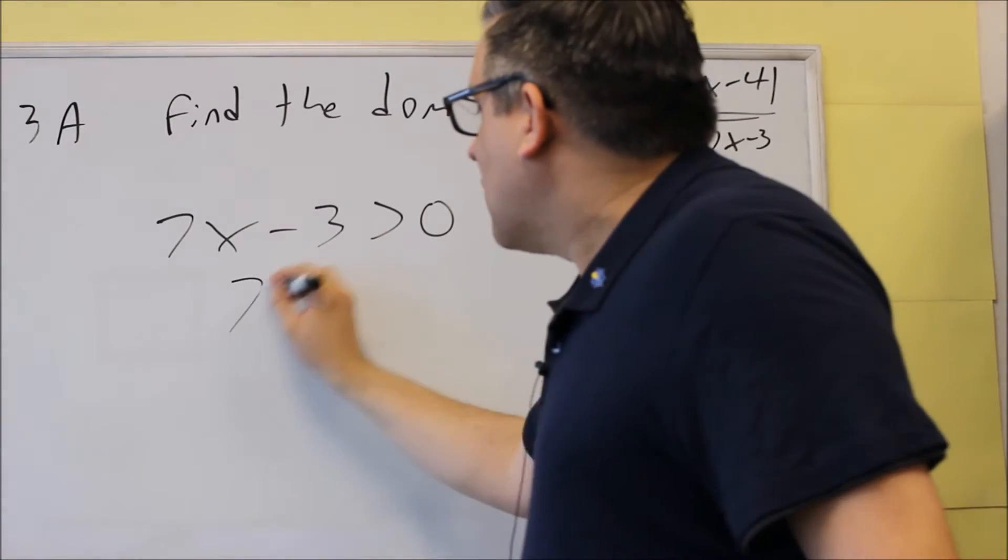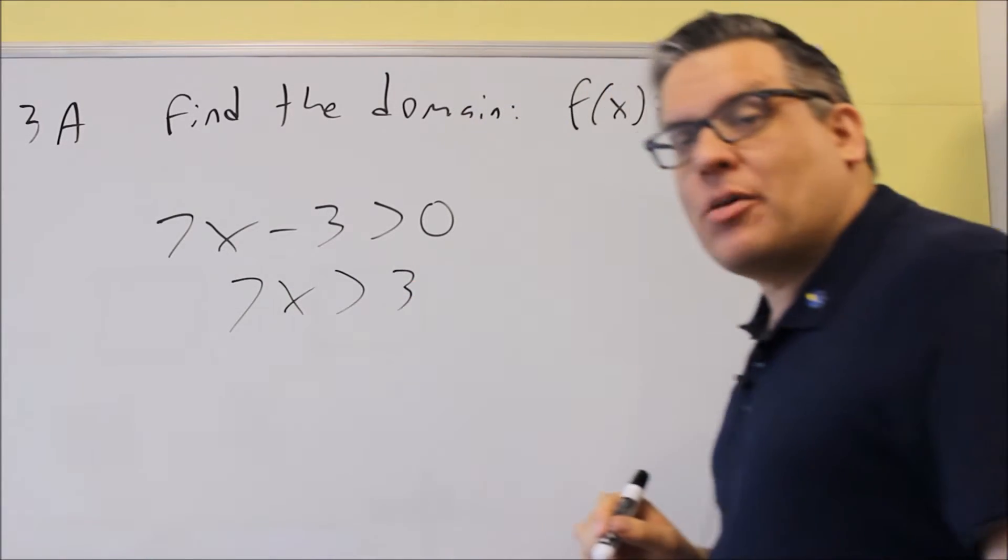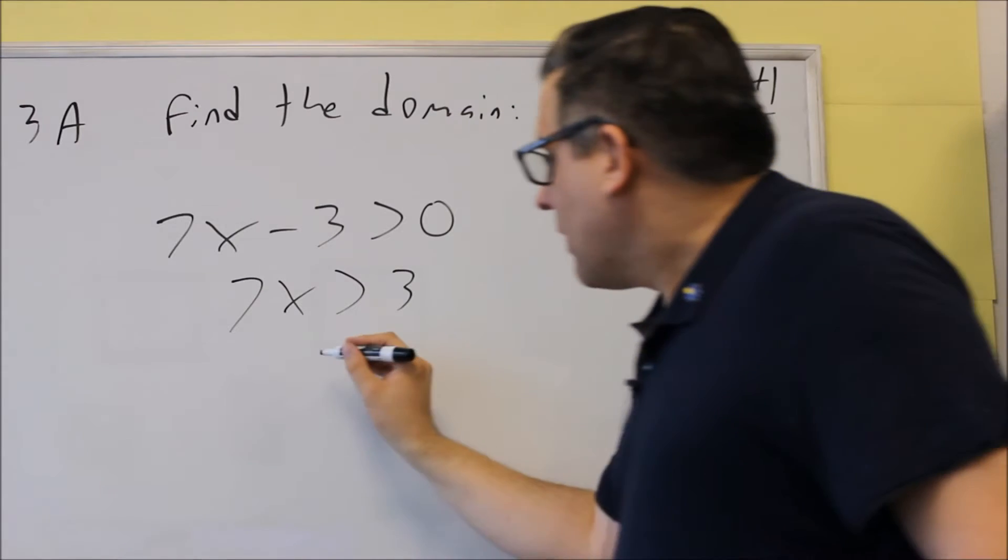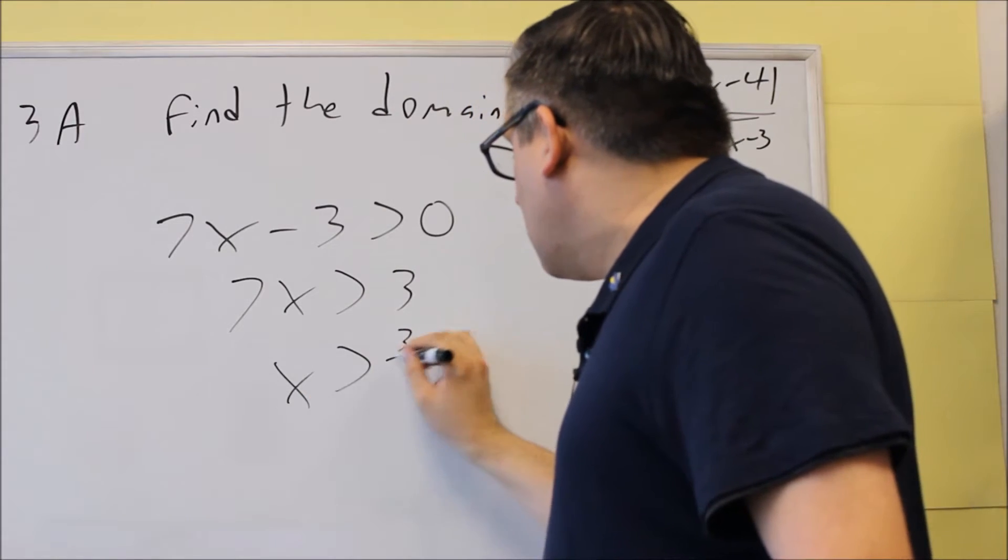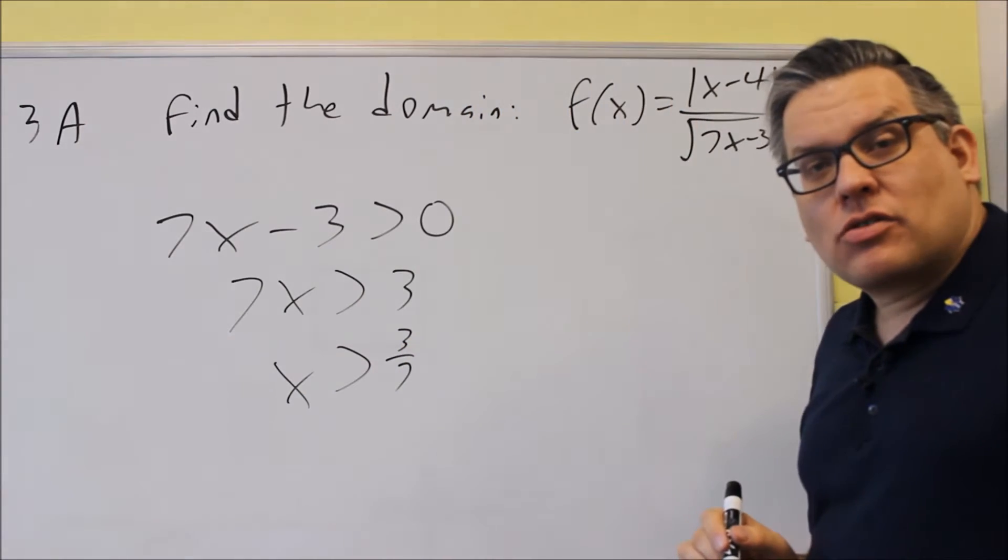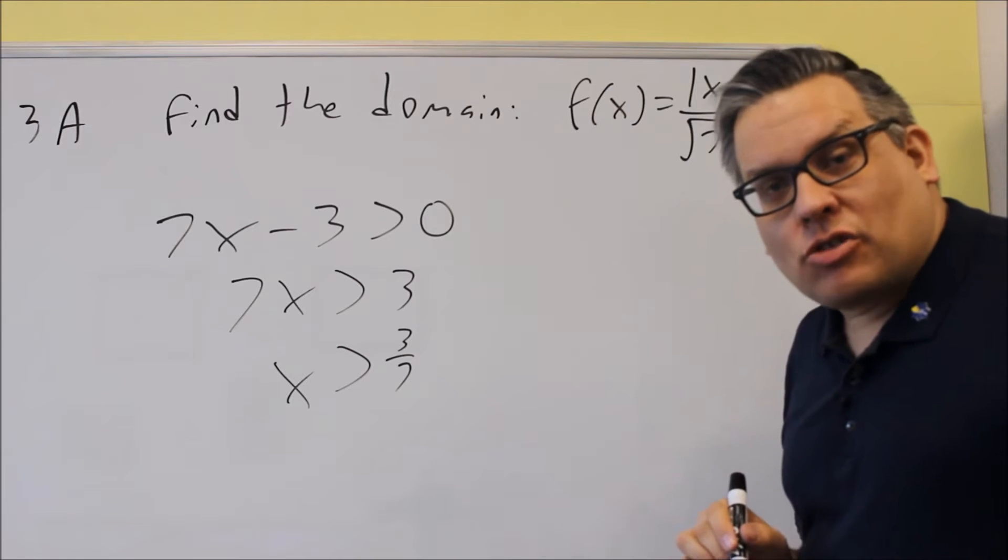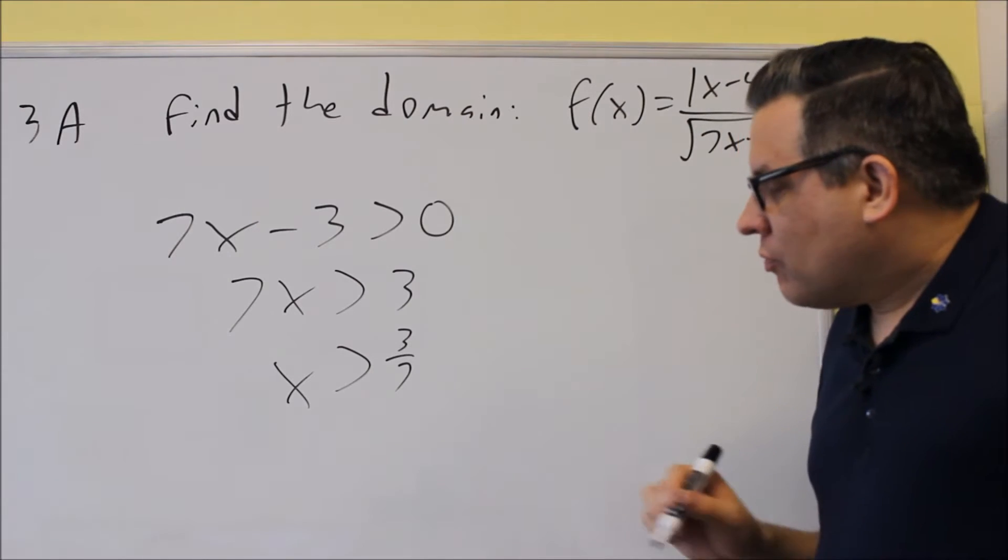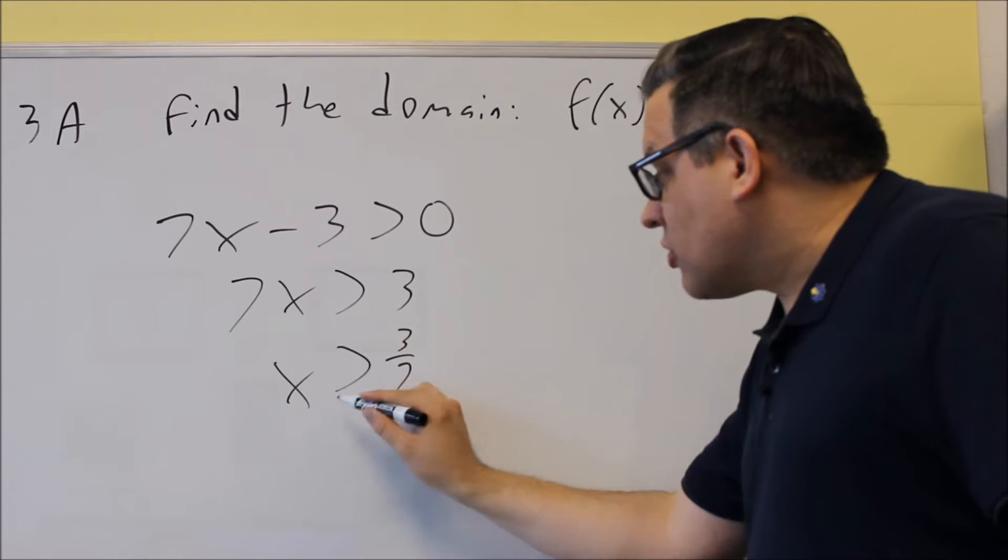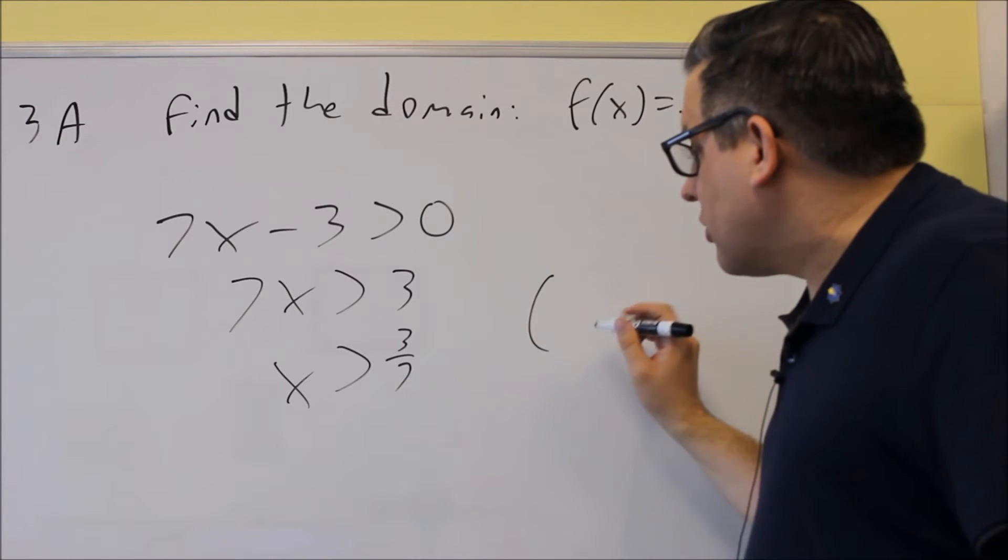So we're going to add 3 to both sides. So 7x is greater than 3. We're going to divide both sides by 7. And we get x is greater than 3/7. It does say to write your answer in terms of interval notation, so I want to make sure you know how to do that.